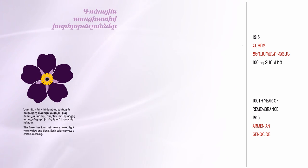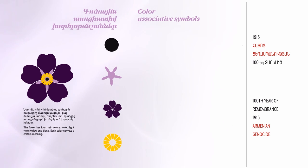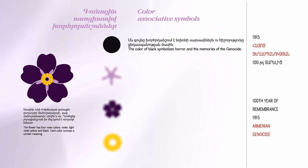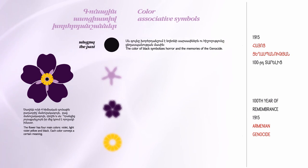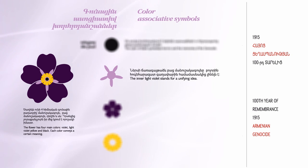The main color palette of the symbol consists of violet, light violet, yellow, and black. Each of the colors conveys a certain meaning. The color black symbolizes the horror of the genocide and the memories of that crime — the past. The inner light violet in the shape of rays stands for a unifying idea — the present.